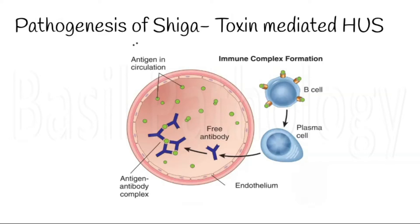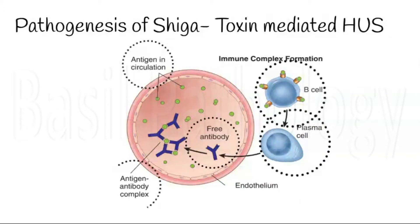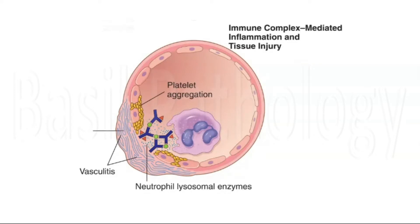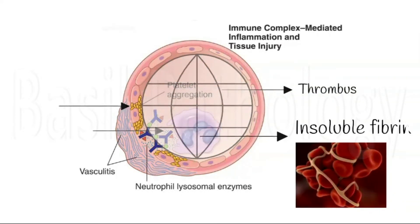Here we can see the pathogenesis of each one. First is Shiga toxin-mediated HUS. When the Shiga-like toxin is released from E. coli bacterial infection, B cells are activated to plasma cells and produce antibodies against the Shiga toxin. The toxin (antigen) combines with antibody to produce antigen-antibody complexes in the circulation, which bind to the endothelium in the tunica intima. This activates leukocytes and the complement system, causing endothelial injury, which in turn activates platelets to aggregate and form thrombus, making RBCs stuck within the insoluble fibrin meshwork.